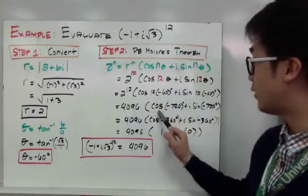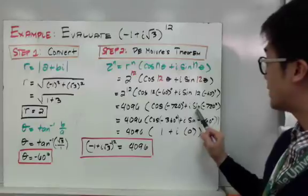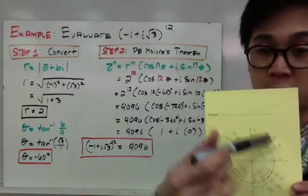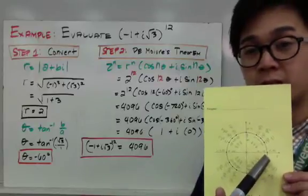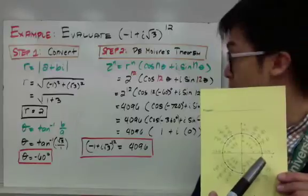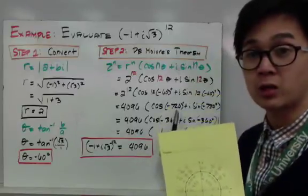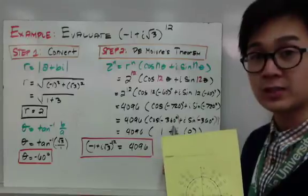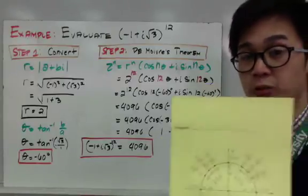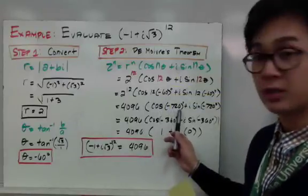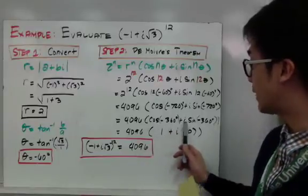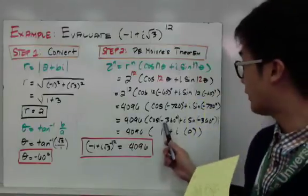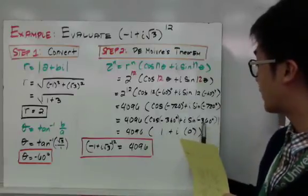Using the unit circle, we need to find cosine and sine of negative 720 degrees. The unit circle only gives values from 0 up to 360 degrees. Since 720 degrees is not in the unit circle, we find its coterminal angle by adding 360 to negative 720, which gives negative 360. Negative 360 is in the unit circle, so we have cosine of negative 360 degrees plus i sine of negative 360 degrees. Cosine of negative 360 is 1, and sine of negative 360 is 0.